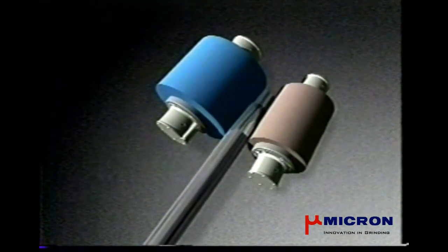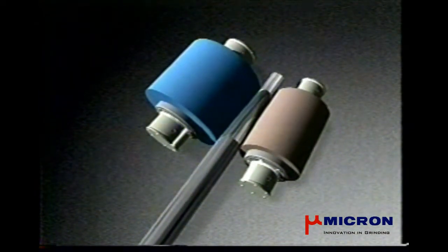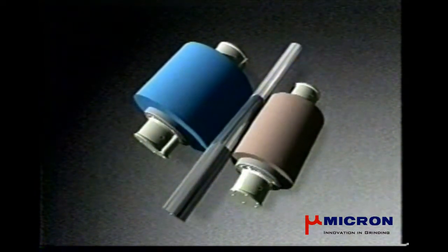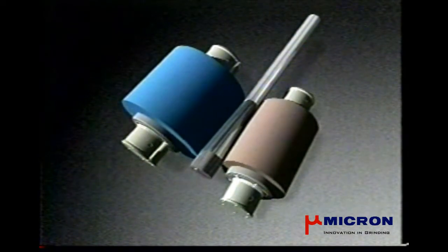The piece of work is supported by the blade and the regulating wheel and is ground as it passes over the blade while being turned by the regulating wheel.